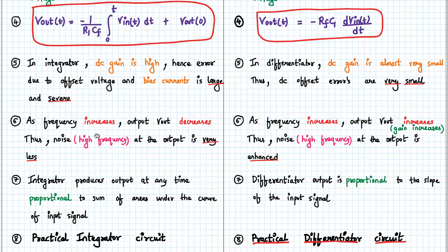As the frequency increases, the output Vout decreases in an ideal integrator, so high frequency noise at the output is very low — the noise, being a high frequency component, does not reach the output. In contrast, for an ideal differentiator, as the frequency increases the output Vout also increases, so high frequency noise is enhanced. This is a drawback of an ideal differentiator.